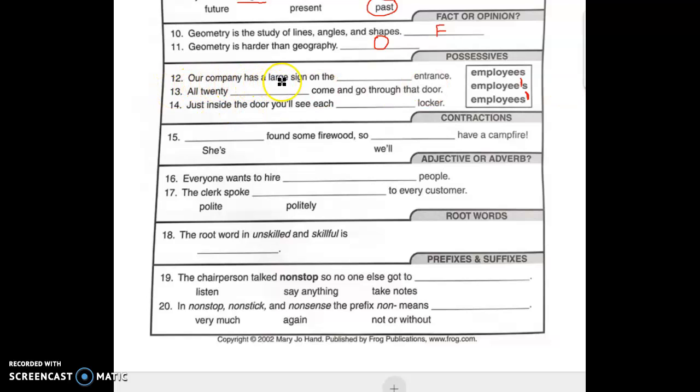Our company has a large sign on the employee's entrance. That means the entrance that the employee walks through. Let's read the other examples so I'm not confused. All 20 employees come and go through that door. That sounds like this one. So I'm going to put the plural here. Employees. It just means more than one.